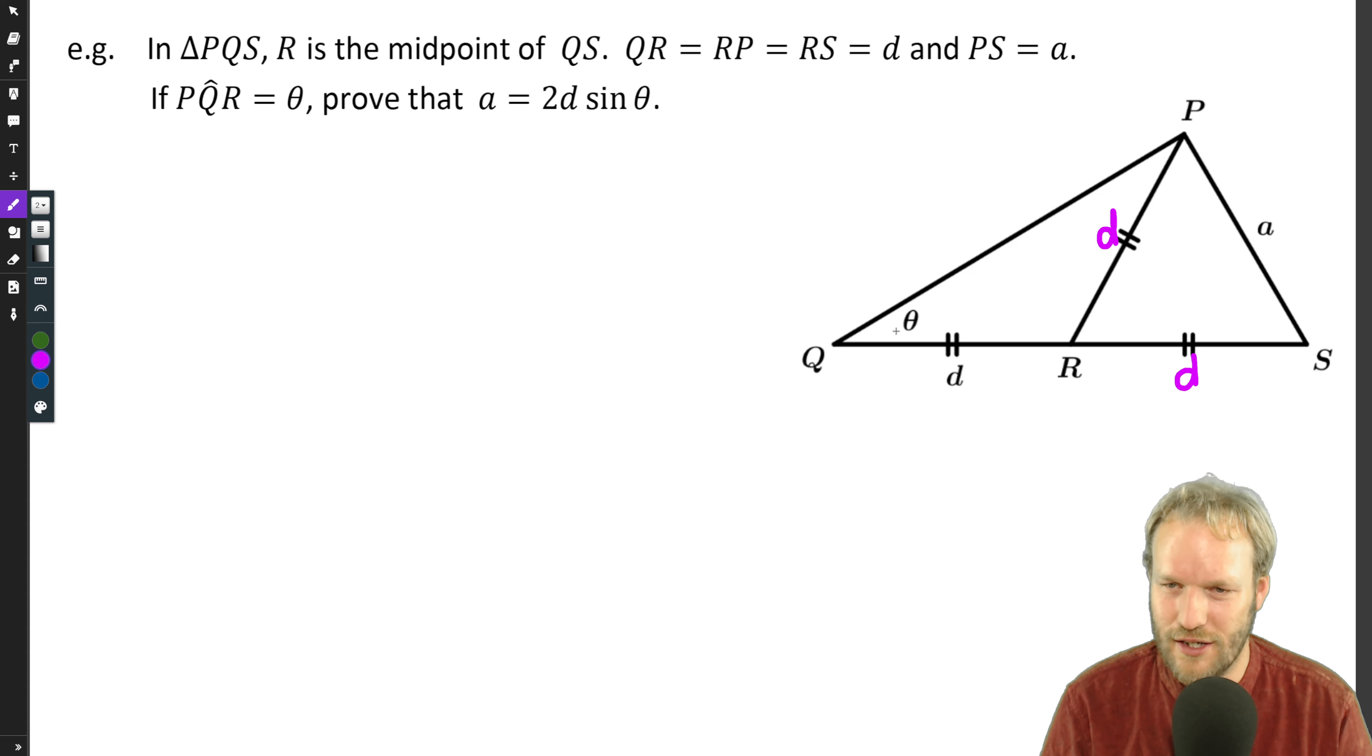This is theta, this angle at Q. Well surely this is also going to be theta because that's an isosceles triangle. So I'm going to call that P1 and P2, and in the same vein I'm going to call that R1 and R2, and just capture our thinking. P1 equals theta because it's an isosceles triangle. So we do have to make our statements and reasons as we go.